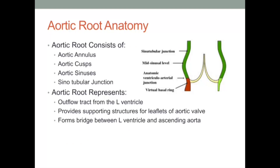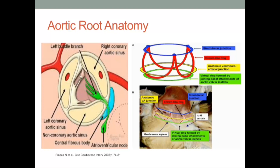An understanding of aortic root anatomy is critical to best describe and differentiate between aortic root enlargement techniques. The aortic root consists of the aortic annulus, aortic cusps, aortic sinuses, and the sinotubular junction. The aortic root represents the outflow tract from the left ventricle, provides supporting structures for the leaflets of the aortic valve, and forms a bridge between the left ventricle and ascending aorta. These pictorials represent various anatomic areas of importance involving the aorta, aortic valve, and aortic root.